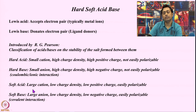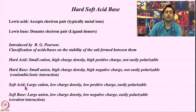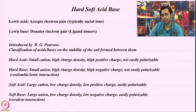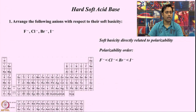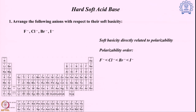Either hard acid-hard base through coulombic or ionic interaction, or soft acid-soft base through covalent interaction, gives us very stable salt formation. That is why if we give a system different choices, the hard acid will find the hard base and the soft acid will find the soft base to form salts and drive the reaction in that direction. We will now follow some questions to understand how this soft acid, hard acid, soft base, and hard base system works.